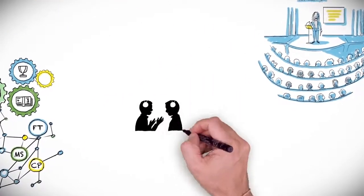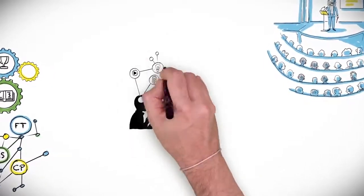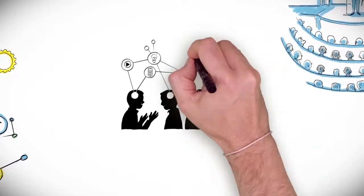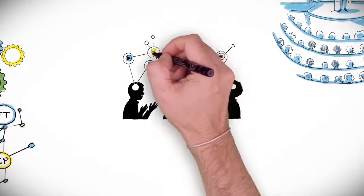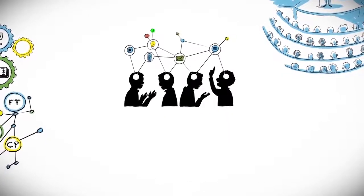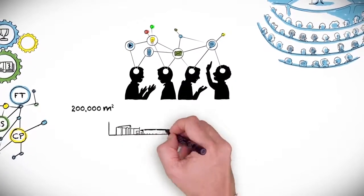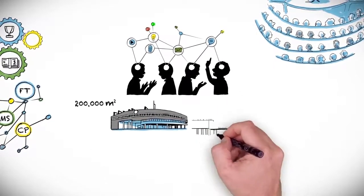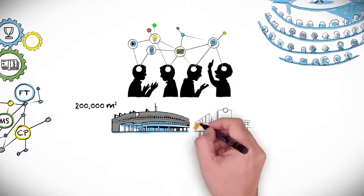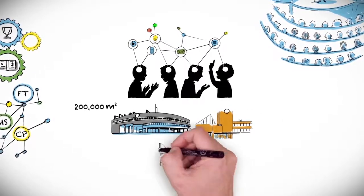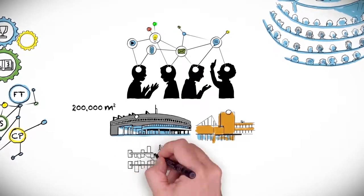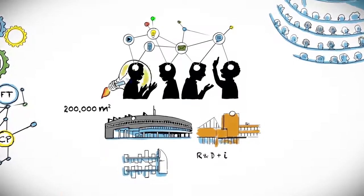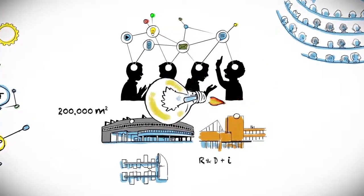From small startups to microelectronics multinationals passing through spin-offs created by researchers from the actual university itself or from the CSIC, more and more companies are opting for establishing themselves in this strategic location. Over 200,000 square meters of land perfectly connected to the center of the city of Valencia, which offers them a broad range of different forms of accommodation and a maximum versatility regarding the spaces, including laboratories and specific spaces for the development of R&D&I activities, and aiding the expansion of their businesses within the park's campus.